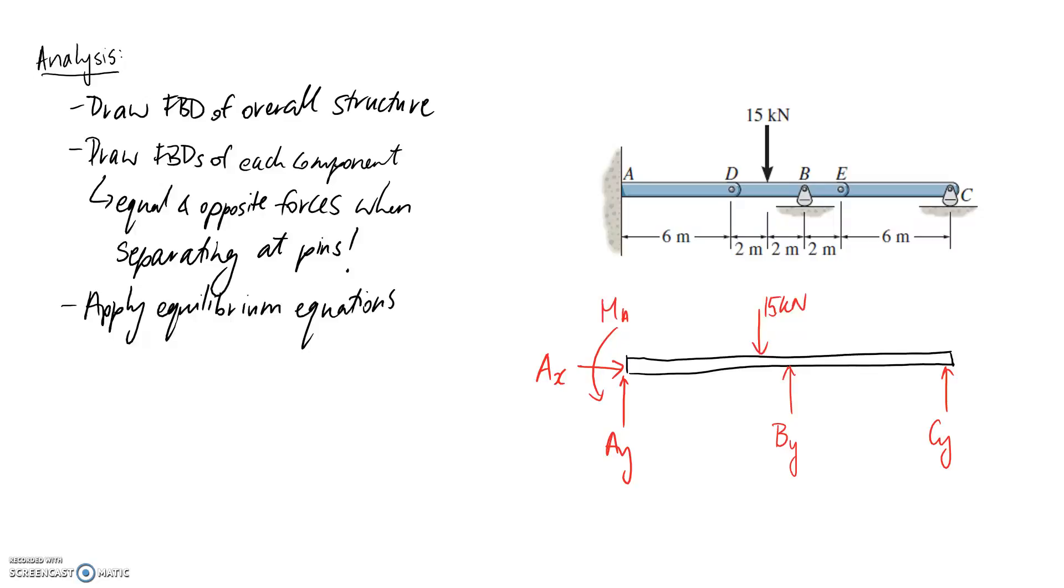So how we get around that is we can do a second set of free body diagrams, which is where we draw a free body diagram for each component that makes up your structure. And the key for this is remembering that you need to have equal and opposite forces on each component when you separate at the pins.